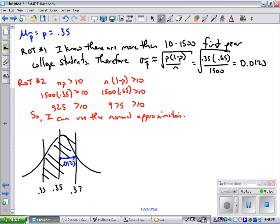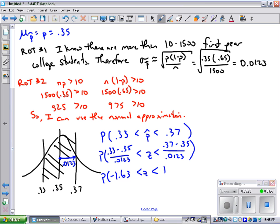So now this takes us all the way back to chapter 2 where I simply need to write the problem, standardize it where my p̂ becomes a z. Take each number, subtract the mean, divide it by the standard deviation. 33 minus the mean, divide it by the standard deviation. 37 minus the mean, divide it by the standard deviation. When I simplify those numbers, it's -1.63 < z < 1.63.